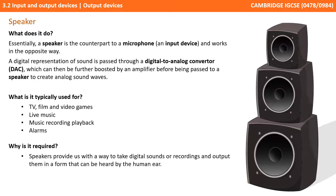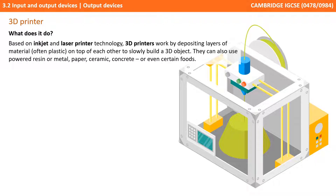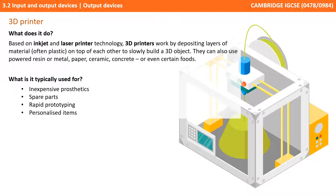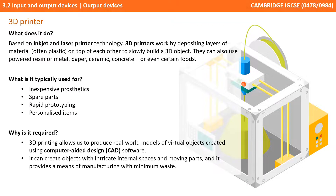Next up are 3D printers. These are based on a combination of inkjet and laser printer technology. 3D printers work by depositing layers of material, often plastic, on top of each other to slowly build up a 3D object. They can also use powdered resin or metal, paper, ceramic, concrete, and even certain types of foods. They are used to make inexpensive custom-made prosthetics, spare parts, rapid prototypes of objects in engineering, and a wide range of personalised items such as key rings. 3D printing allows us to produce real-world models of virtual objects created using computer-aided design software. It can create objects with intricate internal spaces and even moving parts, and it provides a means of manufacturing with minimum waste.